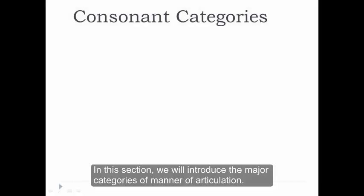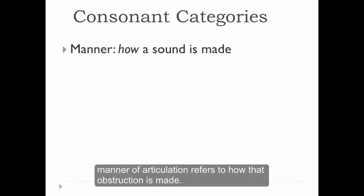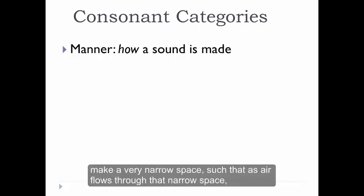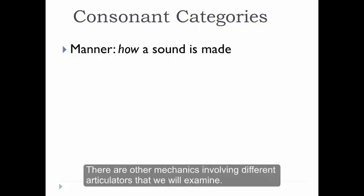In this section, we'll introduce the major categories of manner of articulation. While place of articulation refers to where in the mouth the main obstruction is made, manner of articulation refers to how that obstruction is made. In other words, do the articulators come together so strongly that they completely stop all airflow temporarily? Or do the articulators make a very narrow space such that as air flows through that narrow space, it speeds up and creates a turbulent noise as it rushes out of the mouth? There are also other mechanics involving different articulators that we'll examine.